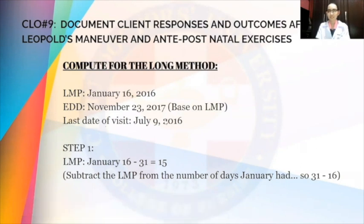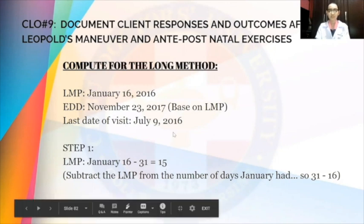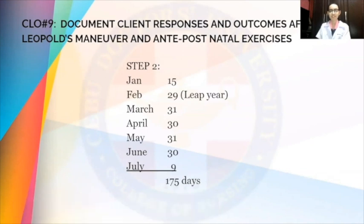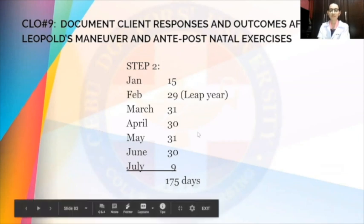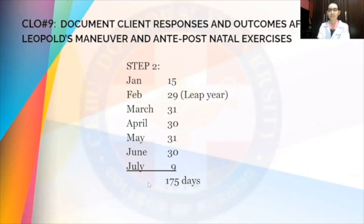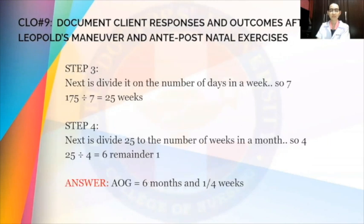We list down all the months and days within January 15 and July 9: January 15, February 29, March 31, April 30, May 31, June 30, July 9. All of these combined together make up 175 days. In step 3, we divide the sum by the number of days in a week, which is 7. So 175 divided by 7 is equal to 25.